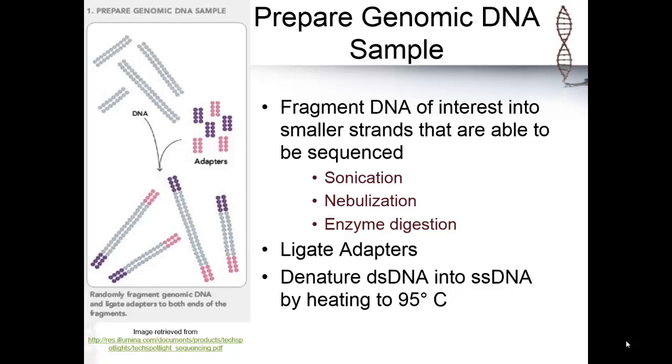Therefore, the DNA is fragmented into short pieces of about 300 to 800 base pairs long and then denatured at 95 degrees Celsius into single strands.